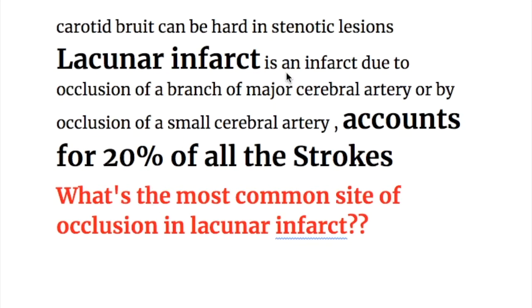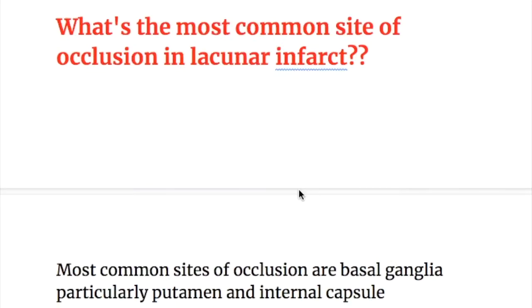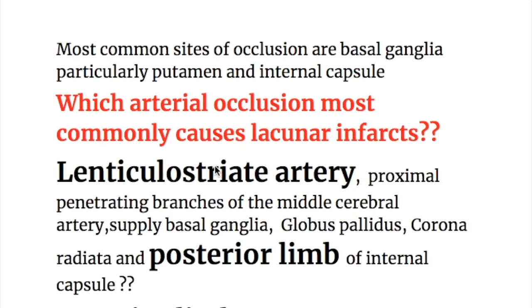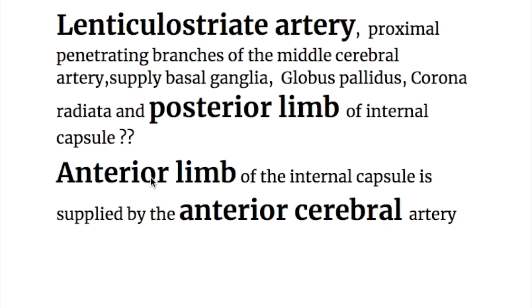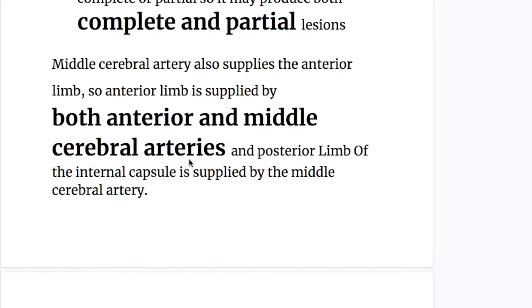Lacunar infarct is an infarct due to occlusion of a branch of a major cerebral artery or a small cerebral artery, accounting for 20% of all strokes. The most common site of occlusion is the basal ganglia, particularly the putamen and the internal capsule. Lenticulostriate arteries are the proximal penetrating branches of the middle cerebral artery, supplying the basal ganglia, globus pallidus, corona radiata, and the posterior limb of the internal capsule. The anterior limb of the internal capsule is supplied by both anterior and middle cerebral arteries.